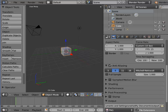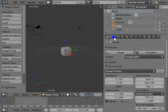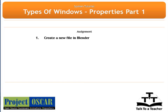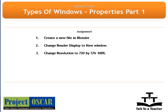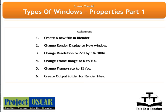That was about the render panel. In this tutorial we have covered the render panel under the Properties window. The rest of the panels shall be covered in the next tutorial. Now go ahead and create a new blend file: change the render display to New Window, change resolution to 720 by 576 at 100%, change frame range to 0 to 100, change frame rate to 15 fps, and create an output folder for the render files.